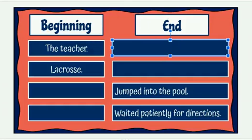I am going to model how to make complete sentences, pausing along the way to get you to do some thinking of your own. Each sentence has a beginning and an end. The beginning tells who or what the sentence is about. The end tells about what that person or thing did, does, or will do.